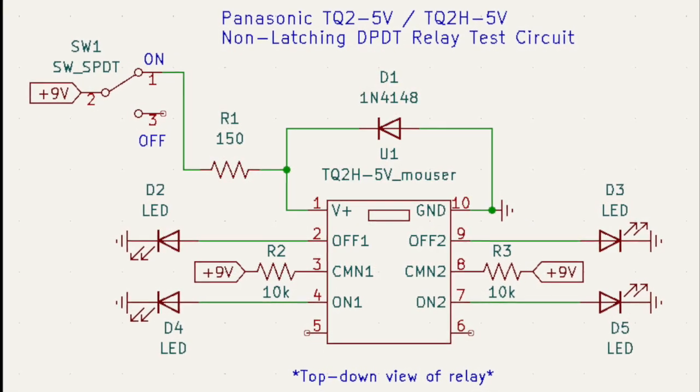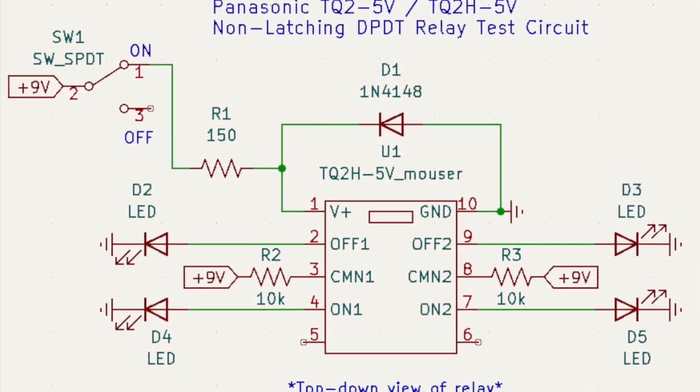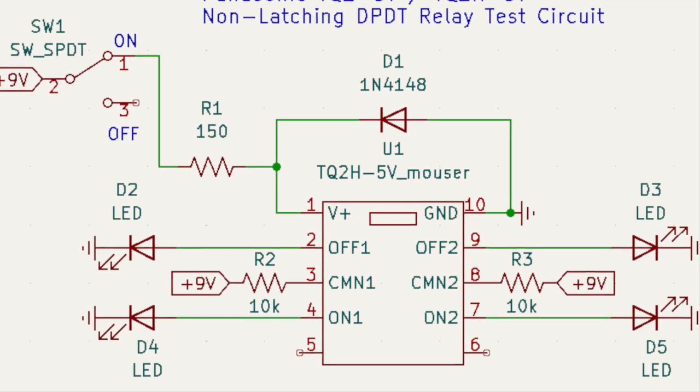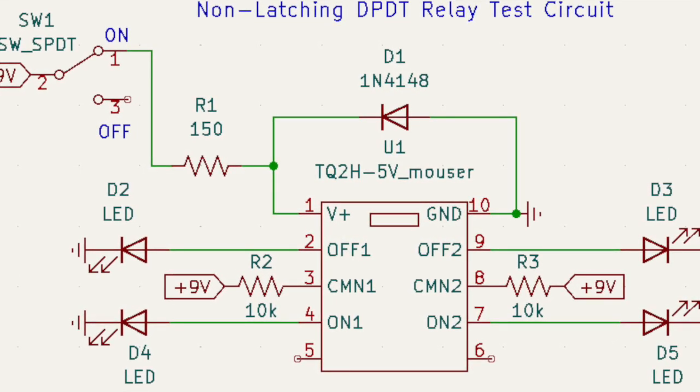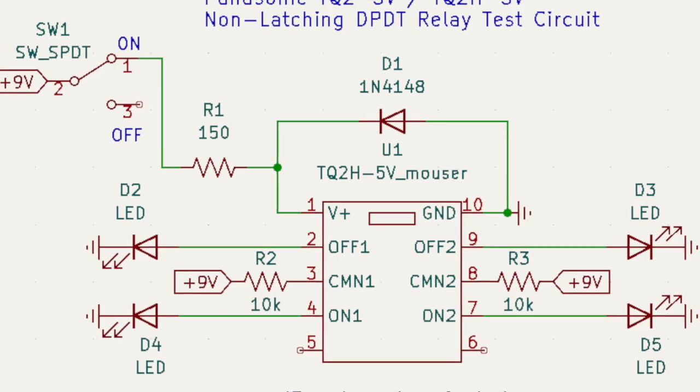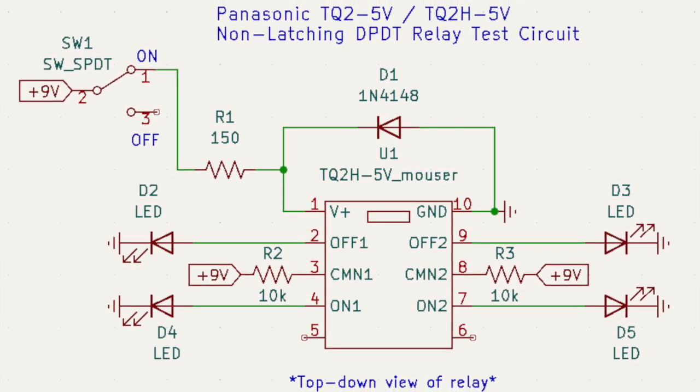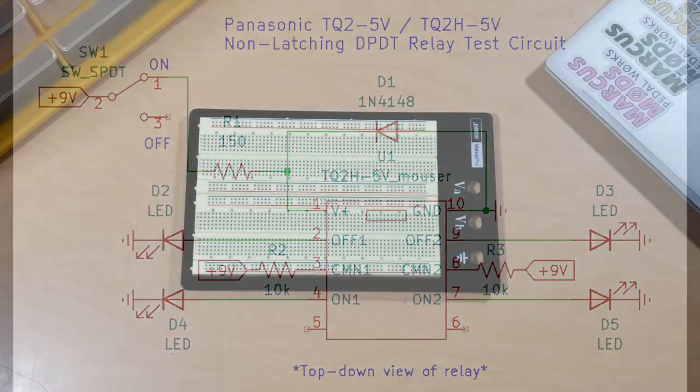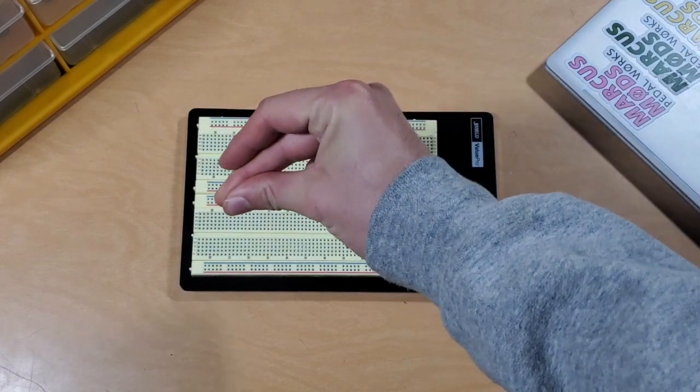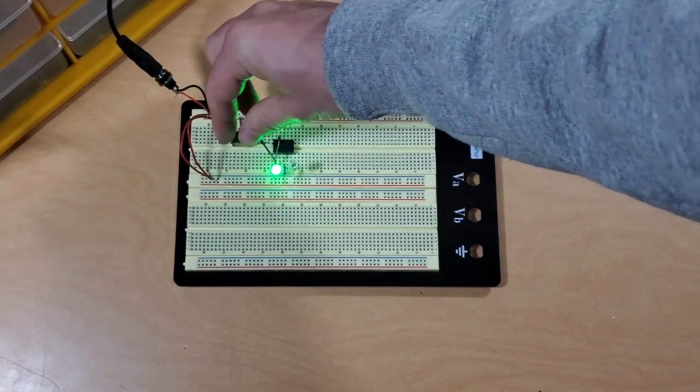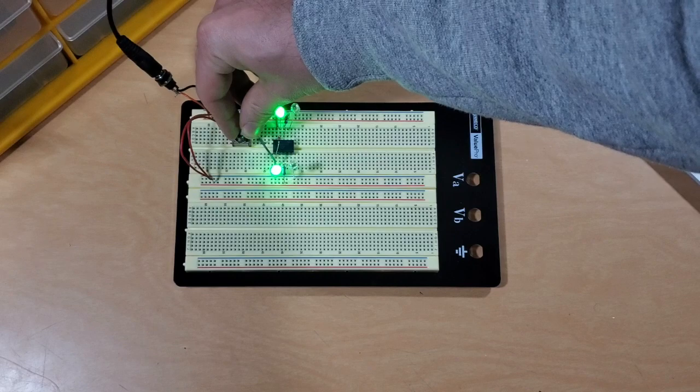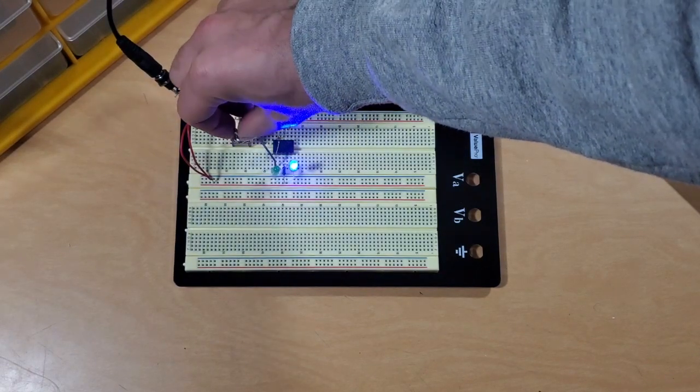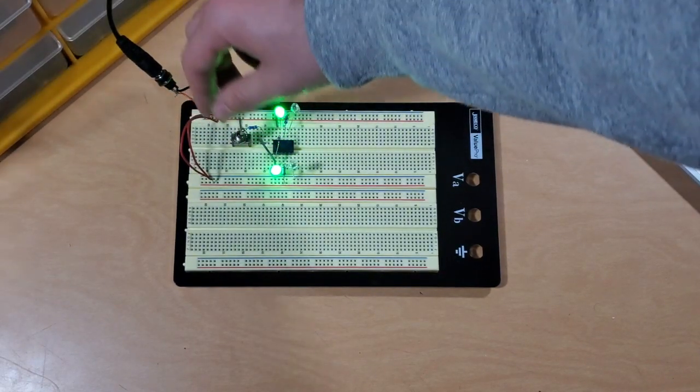For those of you who are like me and are slightly impatient and have a background in electronics, here's a schematic for the circuit. This can also be downloaded in the links below. When you get it all put together, it should look like this. Then we can take our single pole switch and flip it, and it will actuate our TQ series relay. And that's all there is to it.